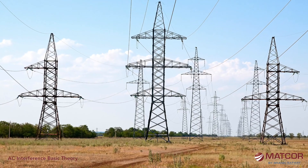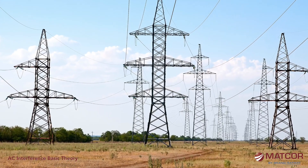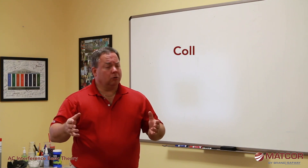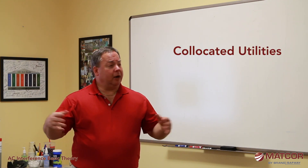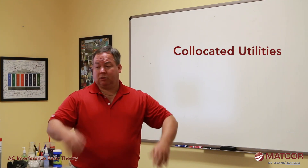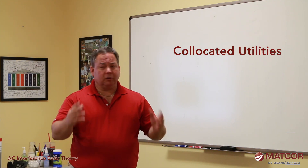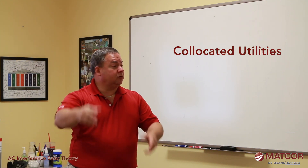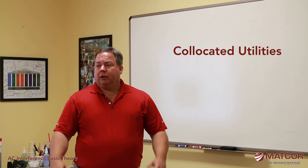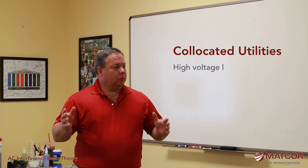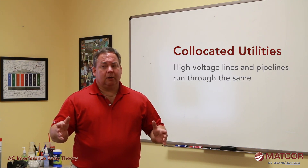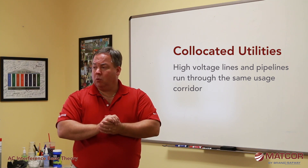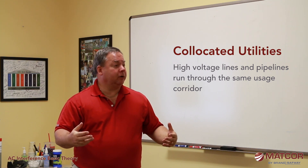More and more we're seeing co-located utilities. An area will say this is our utility corridor, so if you want to run a pipeline you're running through our utility corridor, and if you want to put in a high voltage line you're running through the utility corridor. So more and more we're seeing high voltage lines and pipelines being put in the same usage corridor — it makes sense from a land usage standpoint.